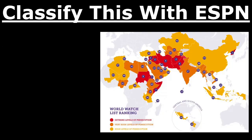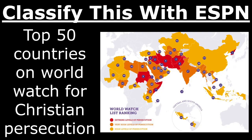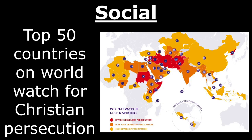Let's classify this example with ESPN. The top 50 countries on the world watch for Christian persecution — this is going to be social, because religion falls under the social category, even though persecution may feel political. However, if the government has a warrant for your arrest because you robbed a bank, that's political. This is social because persecution based on religion is a social issue.